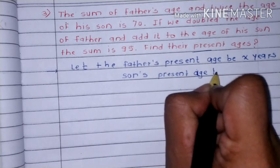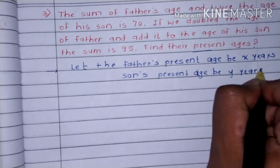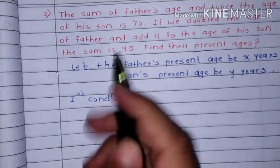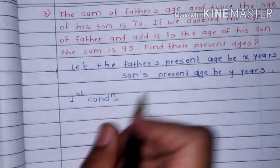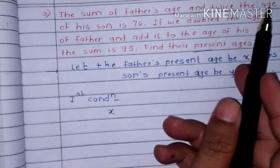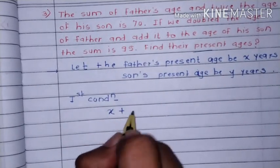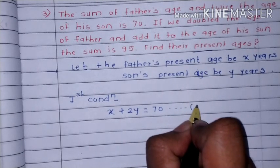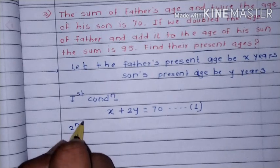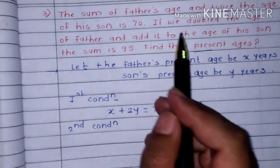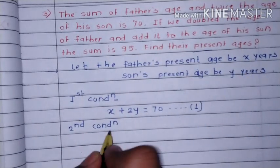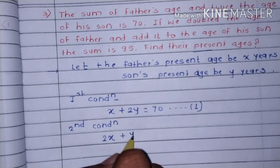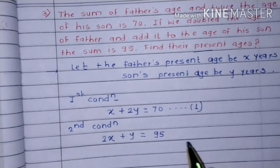Let the father's age be x years and the son's age be y years. First condition: the sum of father's age x and twice the age of his son plus 2y is equal to 70. Second condition: if we double the age of father, 2x, and add it to the age of his son plus y, that is equal to 95.